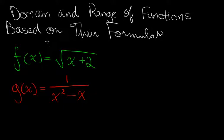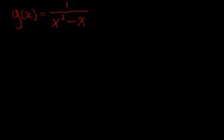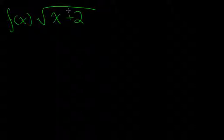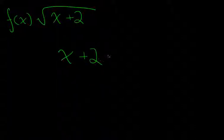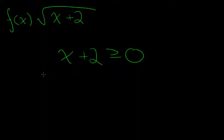So let's start with number one, f(x). f(x) is equal to the square root of x plus two. Because the square root of a negative number is not defined as a real number, the domain of f(x) consists of all the values of x such that x plus two is greater than or equal to zero.